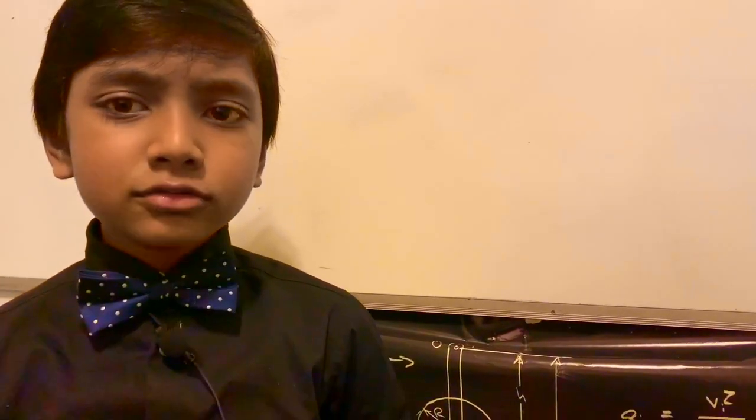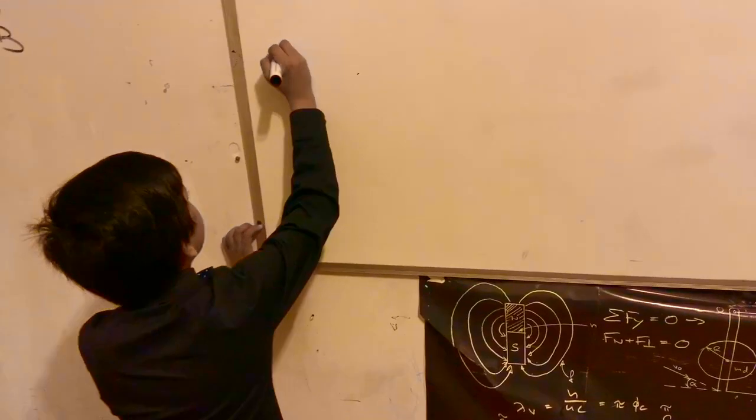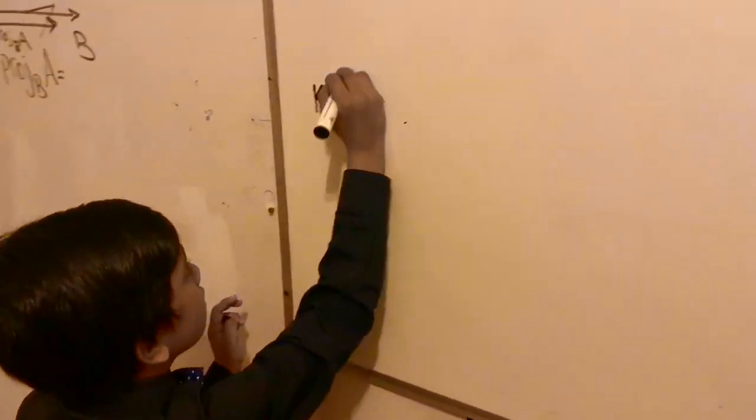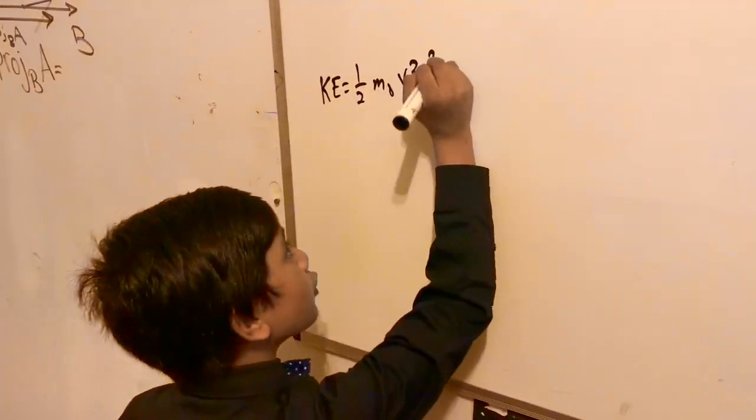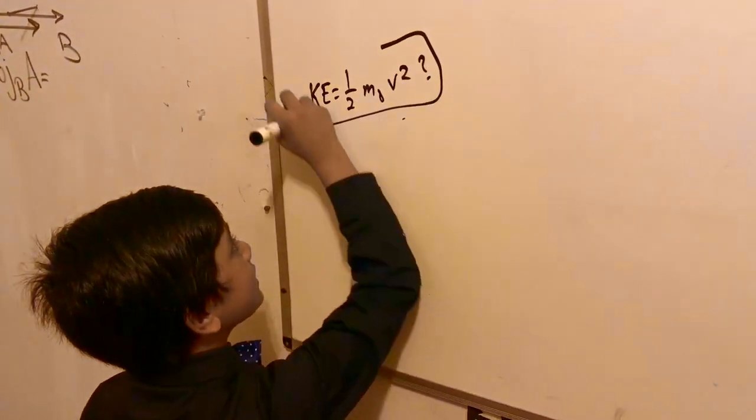Relativistic derivation of kinetic energy, or at least a tiny part of it, because the actual thing is huge and a monstrosity. How did we derive this weird-looking equation? Well, I'm going to tell you how we did exactly this.